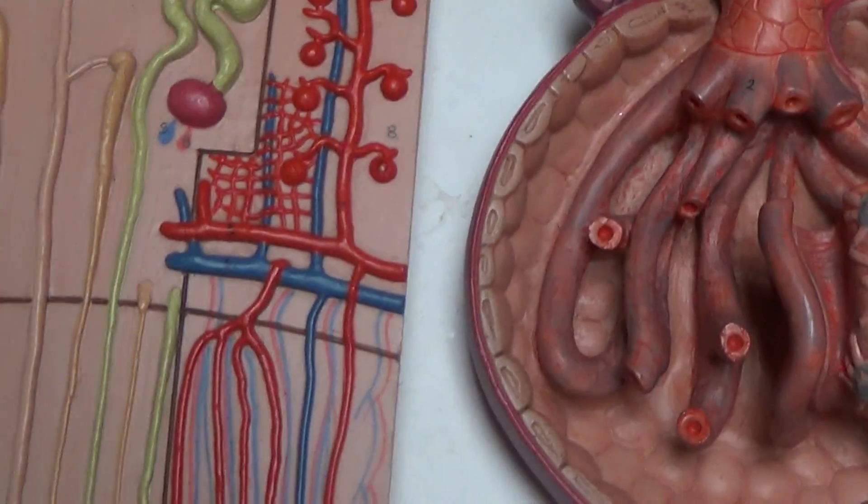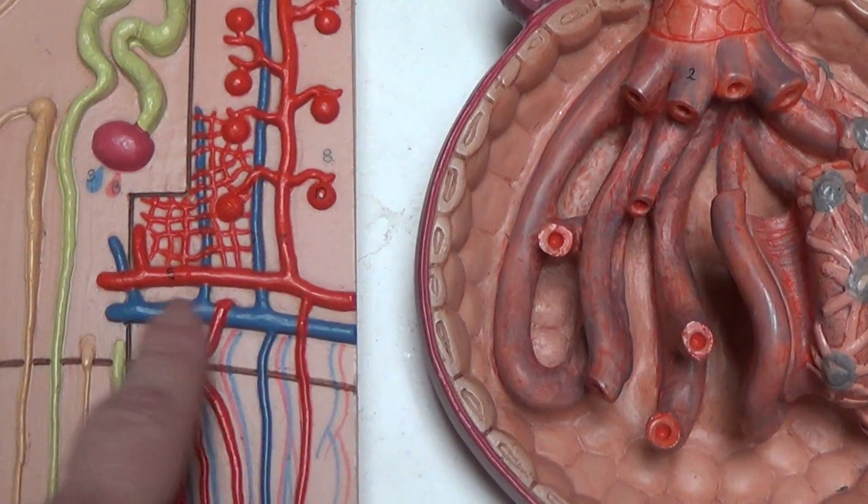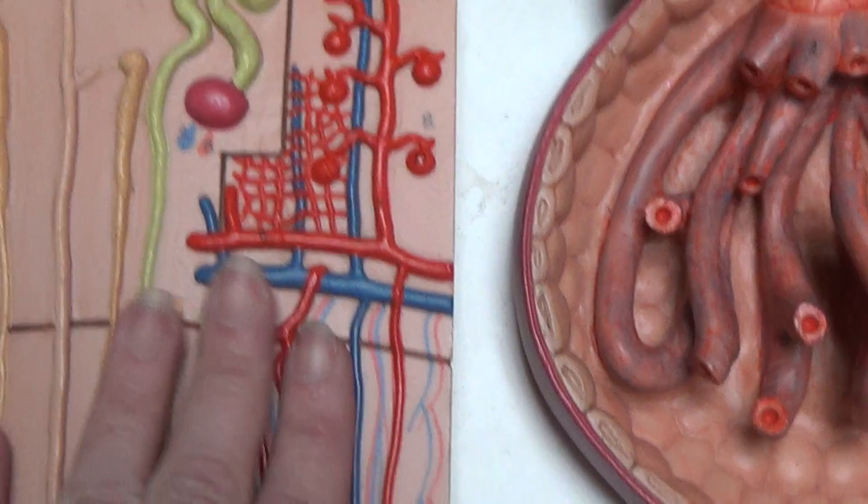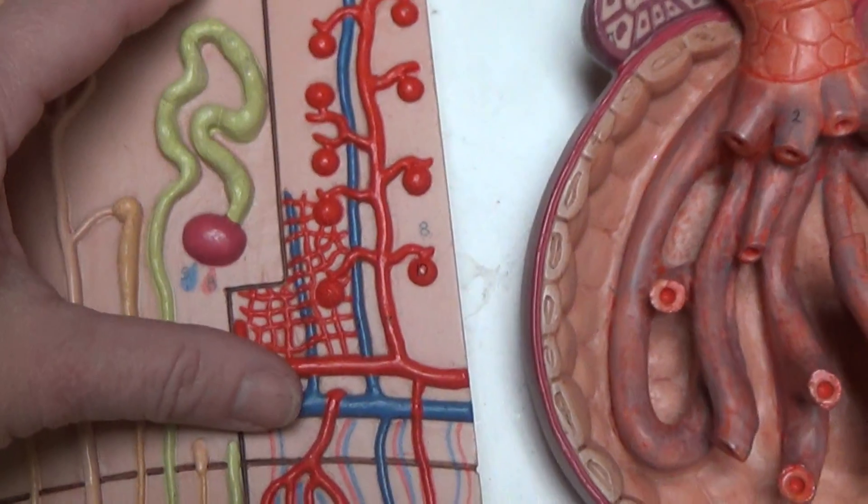Moving to the middle here. This is that arcuate artery and vein. So down here we have medulla. This stuff up here is cortex.